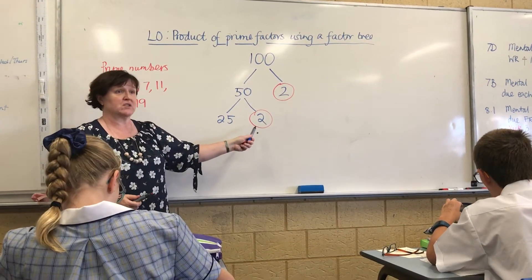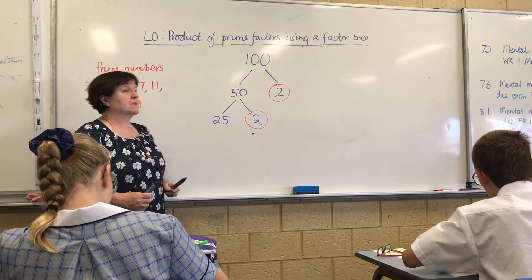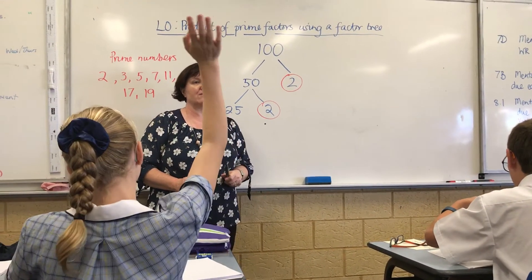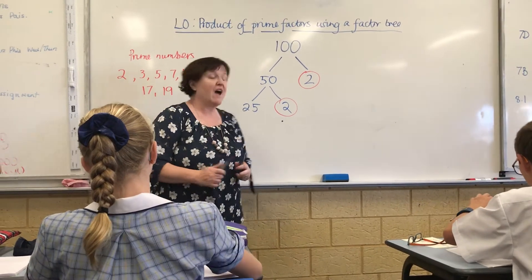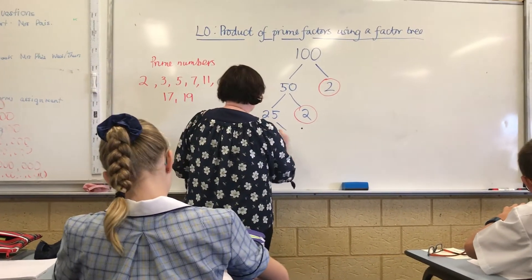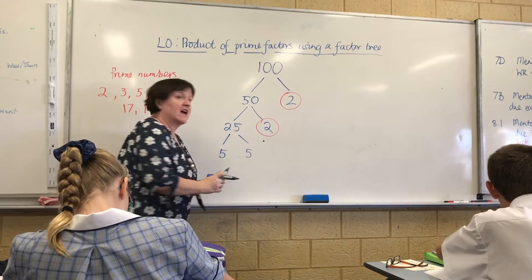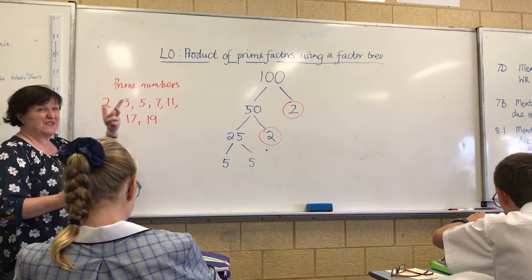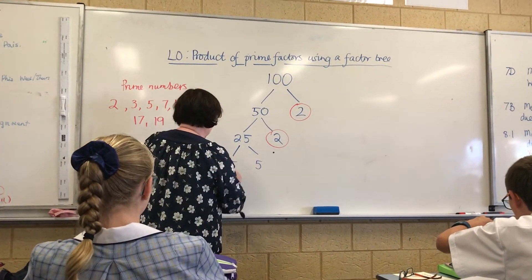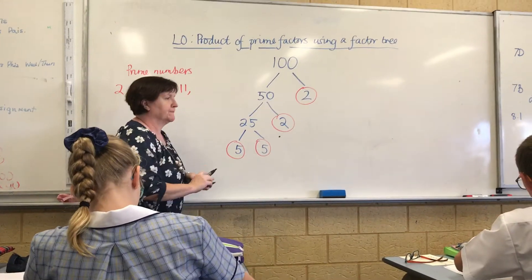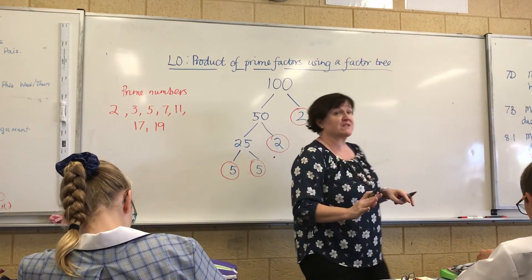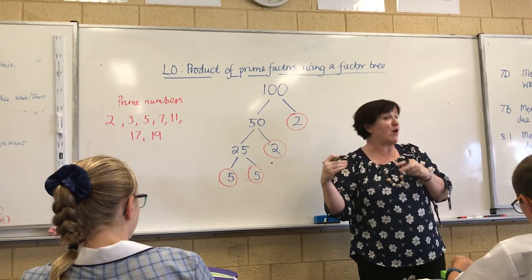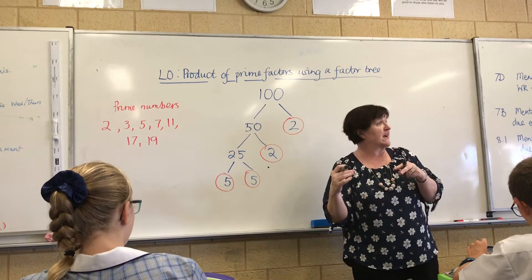A multiplication sum whose answer is 25? 5 times 5 — well done. So we've got 5 times 5, and then we look on our list and 5 is a prime number, so we circle it as well. Now all the branches are finished. You keep going until you get to a prime number.